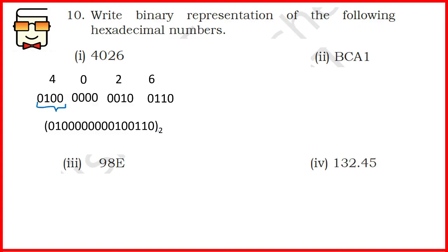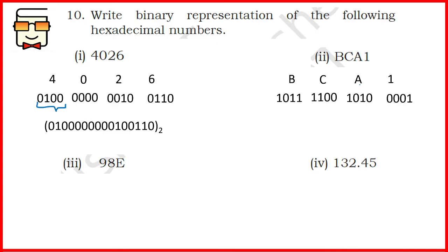For the second part, BCA1: B is represented as 1011, C is represented as 1100, A which is 10 is represented as 1010, and 1 is represented as 0001.